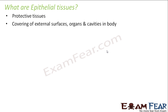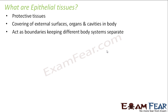Our body is composed of so many delicate organs, and those delicate organs need some protection from the external environment. So the skin acts like that covering. It acts as a boundary keeping different body systems separate. The epithelial tissue, not just the skin, also includes tissues present in other parts of the body, and they all act as boundaries keeping different body systems separate.